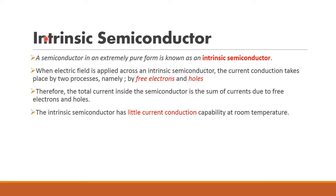Intrinsic semiconductor means pure form of semiconductor — that means no impurity is added to it. When an electric field is applied across this intrinsic semiconductor, there will be current conduction due to free electrons as well as holes. The total current inside the semiconductor is the sum of the currents due to free electrons and holes. Normally, at room temperature, intrinsic semiconductor has little current conduction capability.